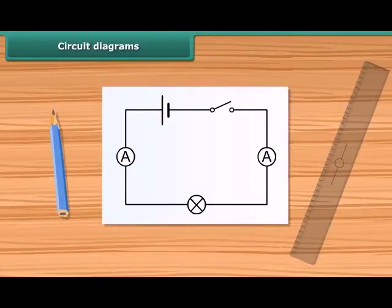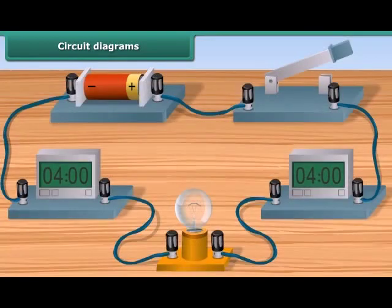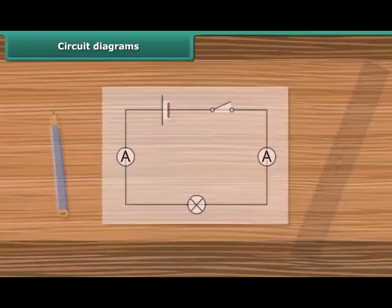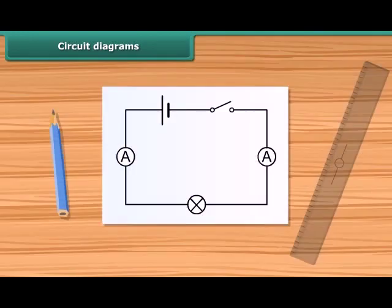A circuit diagram is a simplified representation of an electrical circuit. It is a drawing using standardized symbols of the arrangement, showing how electronic components are connected together.